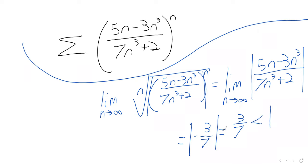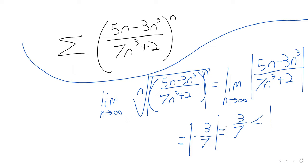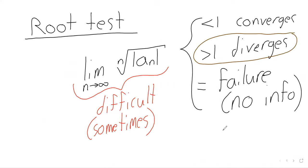And I say that as if we've finished the problem, but we need to interpret that. Three sevenths is less than one. If we are less than one, this thing converges. So this is a convergent series.